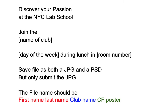You're gonna save your work as both a JPEG and a PSD, but you're only submitting the JPEG. If you submit multiple versions, name them V1, V2, etc. The file name for your work should be: first name, last name, the club name, and then 'CF poster' — that way I can easily identify it from all the other folders I have in the Google Drive.